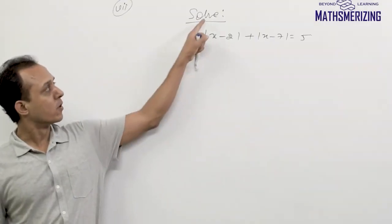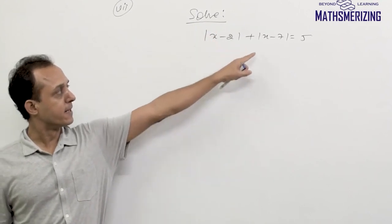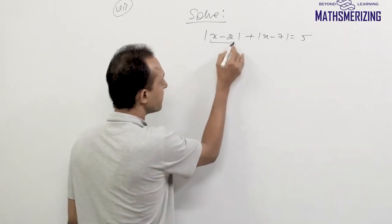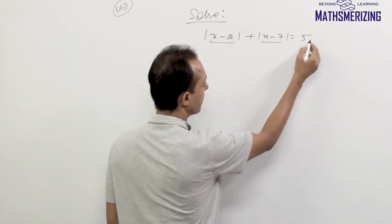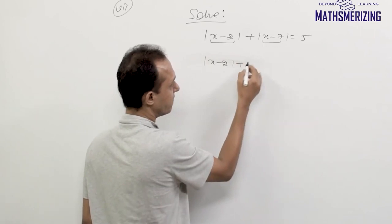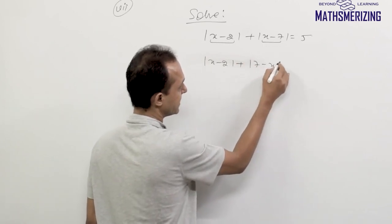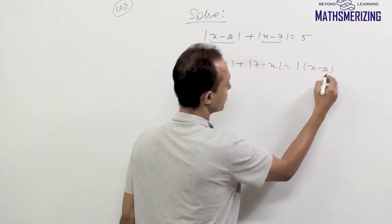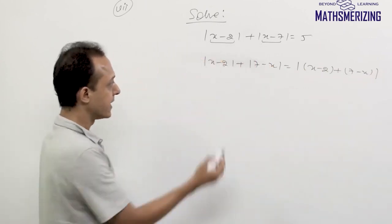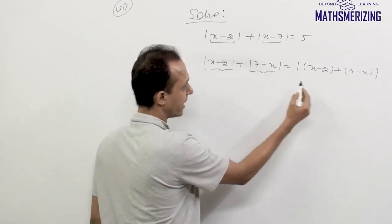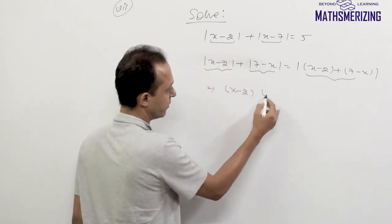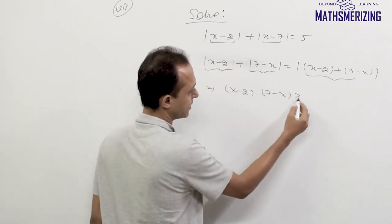Next example: solve |x - 2| + |x - 7| = 5. If I subtract (x - 2) from (x - 7) and take the modulus I get 5. I can rewrite this as |x - 2| + |7 - x| = |(x - 2) + (7 - x)| = 5, which is of the form |x| + |y| = |x + y|. So the condition is x·y ≥ 0, meaning (x - 2)(7 - x) ≥ 0.